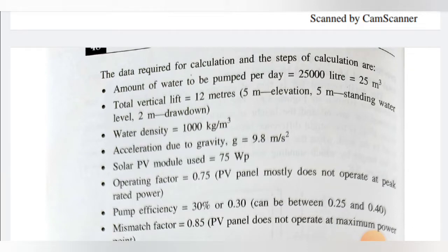First, we calculate the given data — the data required for the calculation and steps of calculation. Step one is the amount of water to be pumped per day. In this case study, we have taken 25,000 liters of water per day, which equals 25 cubic meters of water per day. The total vertical lift — how much height we have to lift the water — is 12 meters.